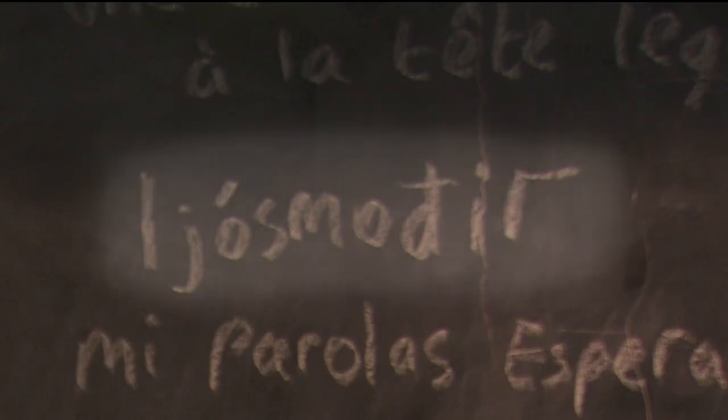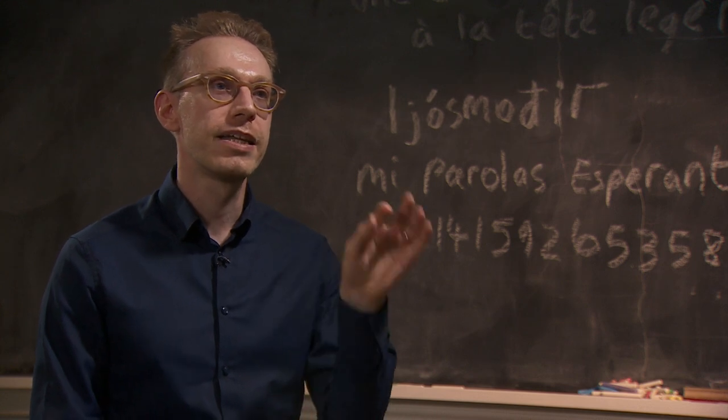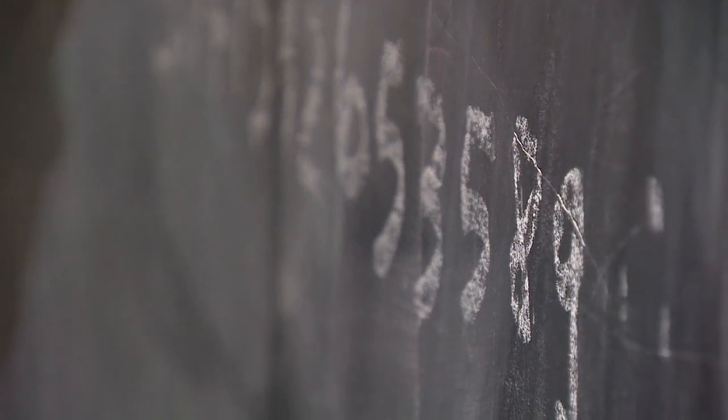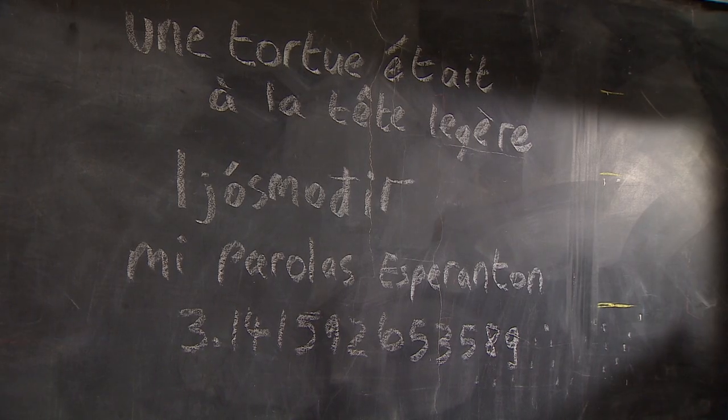Ljósmóðir is an Icelandic word. It's one of my favorite words. It means midwife, but it literally means light mother. And this is of course the first ten, twelve digits of pi, my language, the language of numbers which I used and understood as a child. It's a private language, of course. Nobody understands it apart from me.